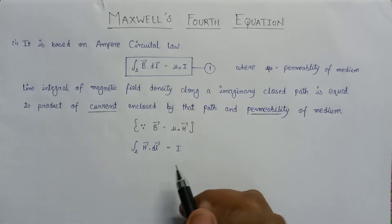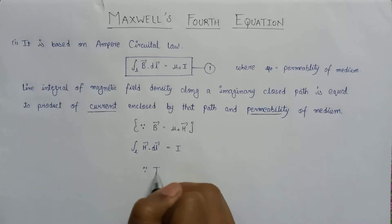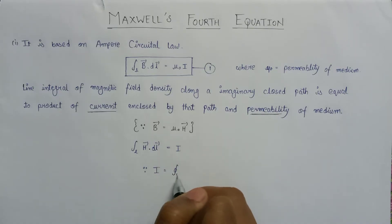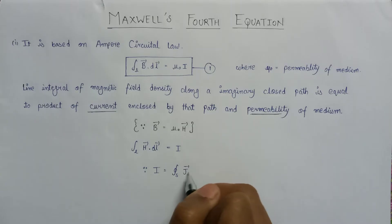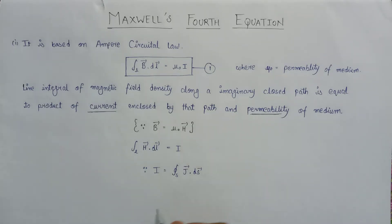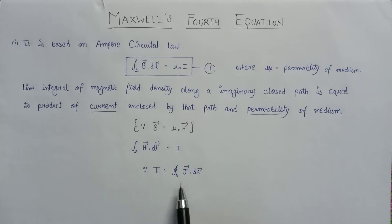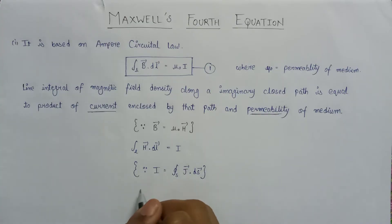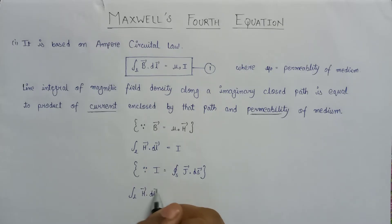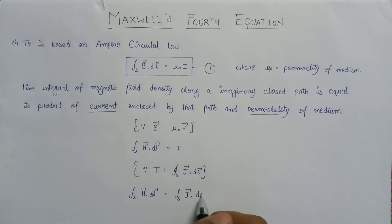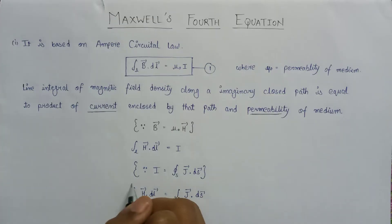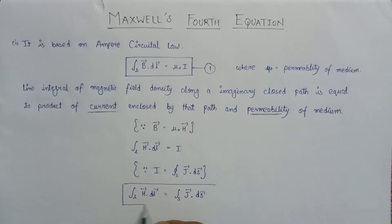We also know that the current I equals the integration over a closed surface of J·dS. Here, J is nothing but current density, or the current passing per unit area. If we substitute the value of I in this expression, we get the line integral of H·dL equals the surface integral of J·dS.